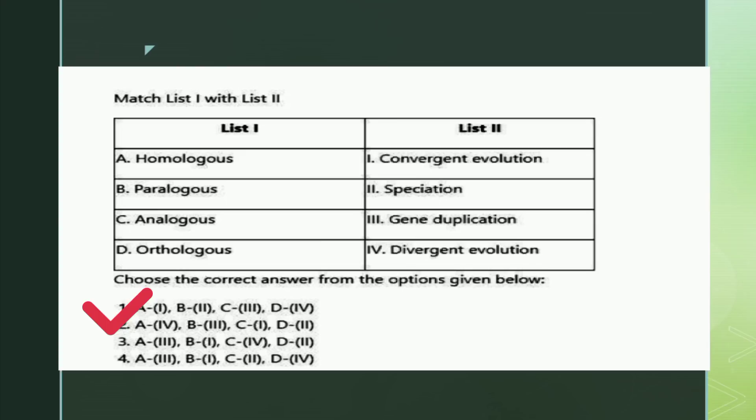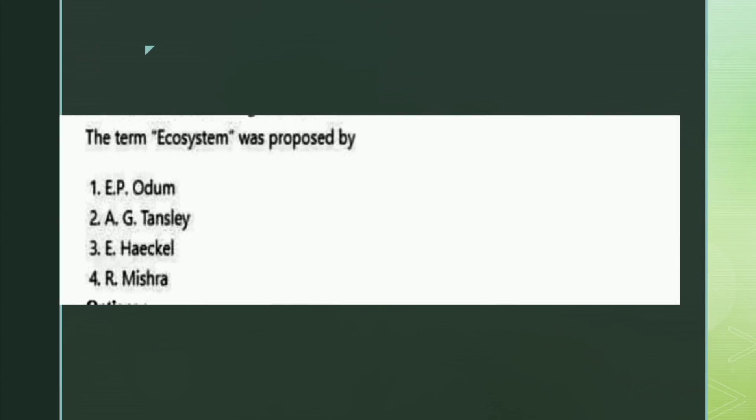The next question: the term 'ecosystem' was proposed by whom? The options are T.P. Odum, A.G. Tansley, E. Haeckel, and R. Mishra. The right answer is option three: E. Haeckel.